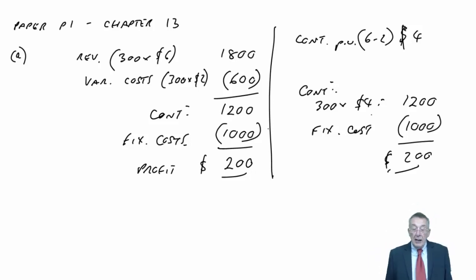Whatever the sales units turn out to be, whether it's 300, 400, or 100, the contribution will always be the number of units times $4. But regardless of the activity level, the fixed costs will remain at $1,000. So for part B, what is the break-even point?